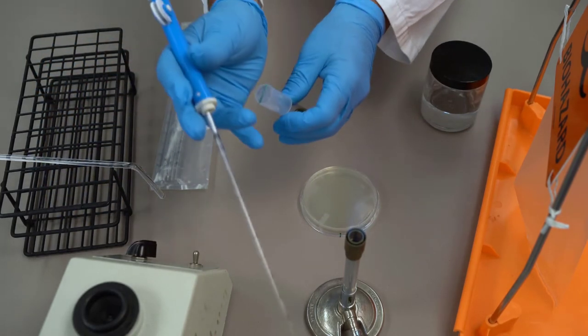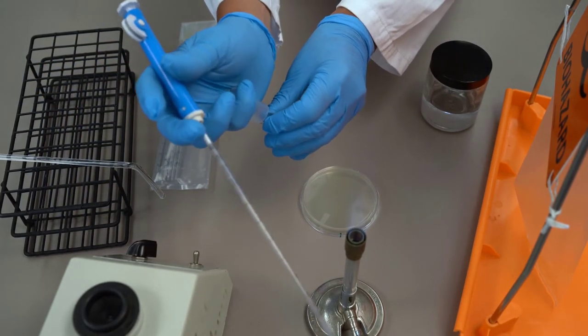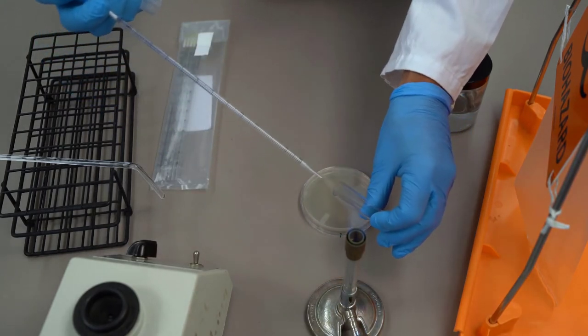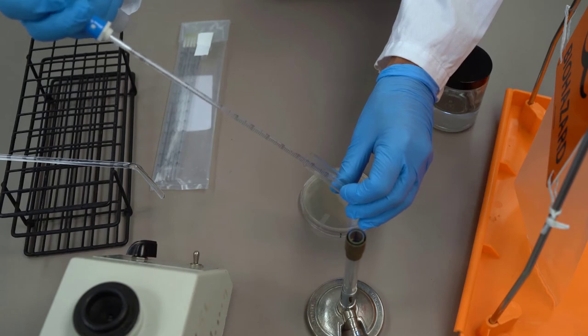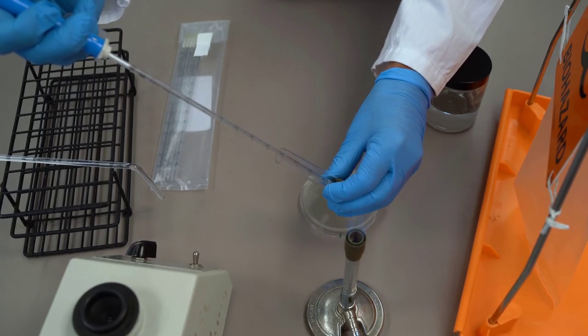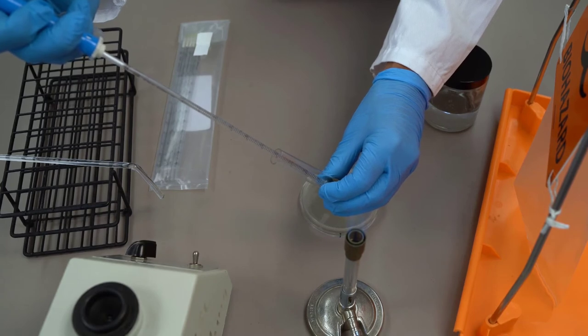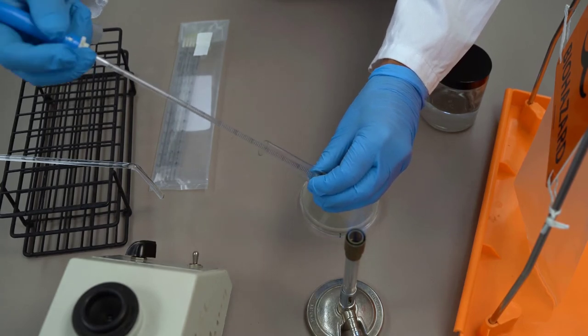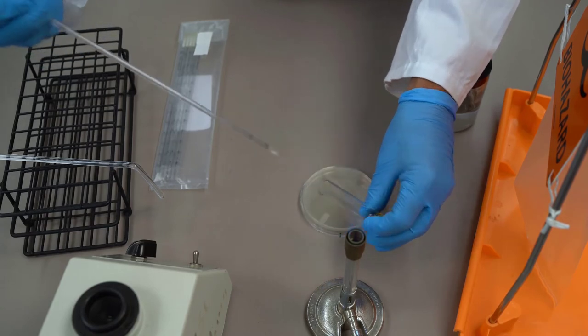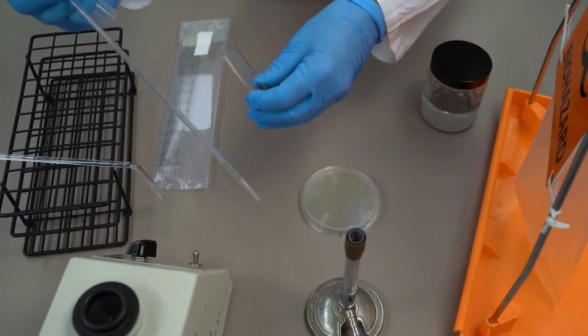We need to remove the cap of the tube and flame the mouth of the tube. Then we're going to put our pipette in the inoculum. I'm going to take up 0.2 milliliters, but only dispense 0.1 milliliters to avoid using the less accurate tapered end of the pipette. Flame the mouth again and return the cap.